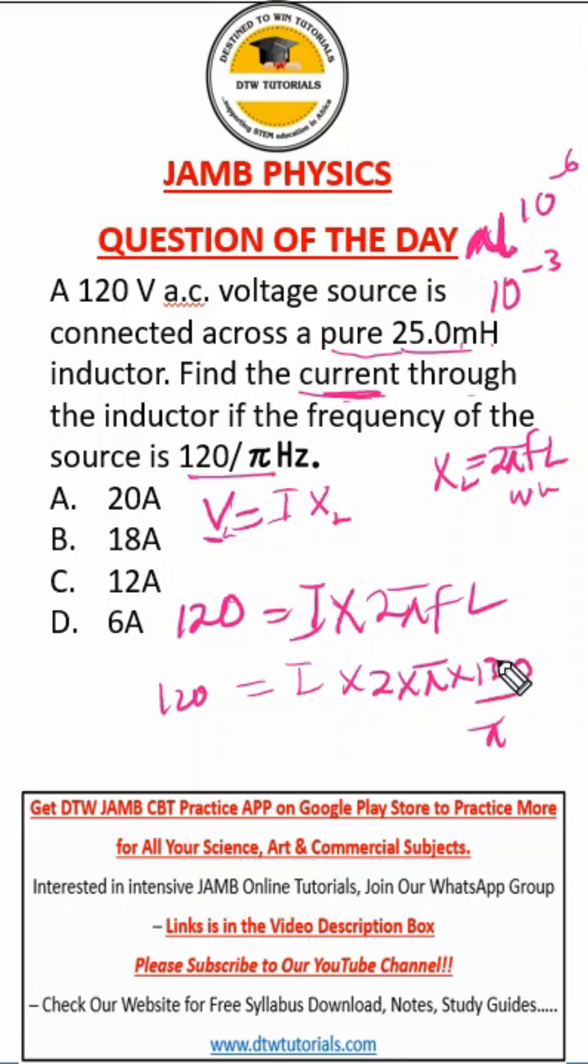And what is L? Our L is 25 raised to power 10 negative three. 25 raised to power negative 10... actually 25 raised to power negative three is 25 divided by 1000.